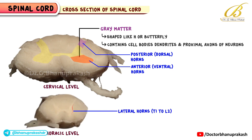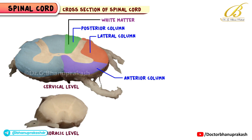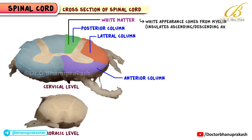These horns are connected across the midline by the gray commissure, which surrounds the central canal. White matter is found around the periphery in anterior, lateral, and posterior columns. Its white appearance comes from myelin, which insulates ascending and descending axons. These axons form tracts carrying signals to and from different parts of the body.